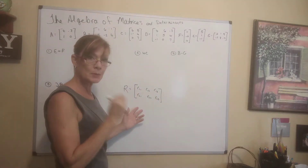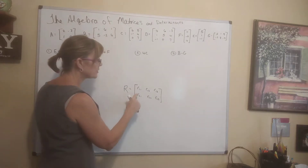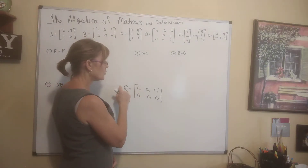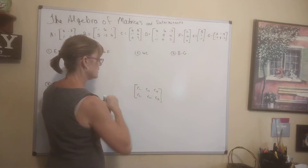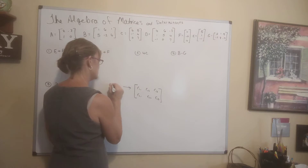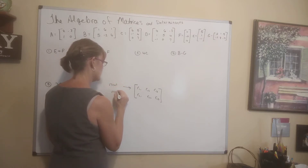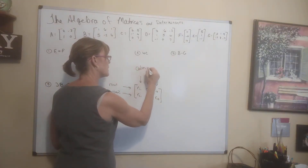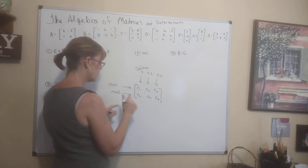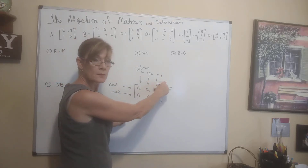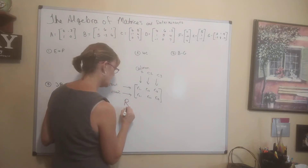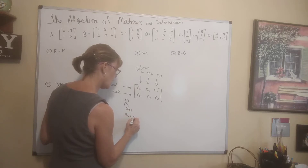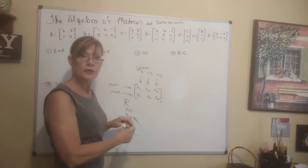Each element is assigned a specific place. We have row 1, row 2, column 1, column 2, and column 3. Matrix R has 2 rows and 3 columns, so the size of matrix R is 2 by 3. It's always row by column — order matters, row first then column.